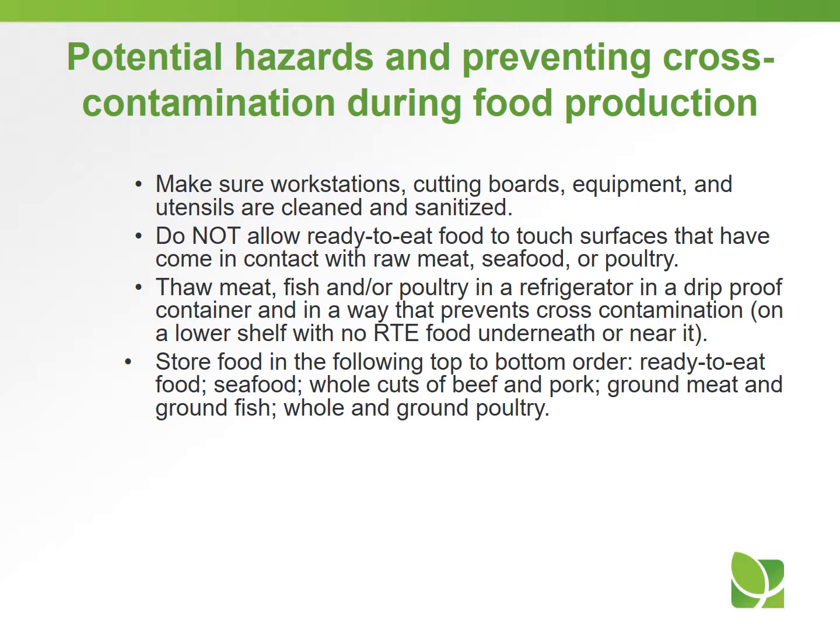Thaw meat, fish, and/or poultry in a refrigerator in a drip-proof container in a way that prevents cross-contamination — on a lower shelf with no ready-to-eat food underneath or near it.